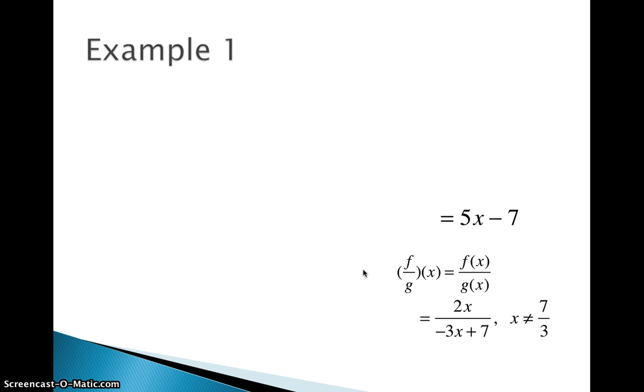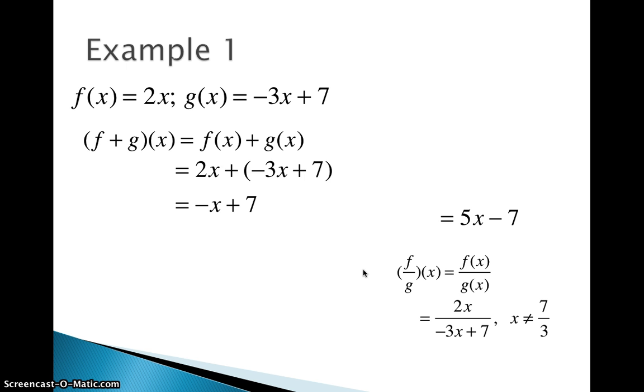Let's look at one example. Let's use f of x equals 2x, and g of x equals negative 3x plus 7. So we'll start with f plus g of x. We split this up, and we do f of x plus g of x. So we combine 2x and negative 3x plus 7. We combine the x terms. 2 plus negative 3 is negative 1. Negative x plus 7 is my new rule.